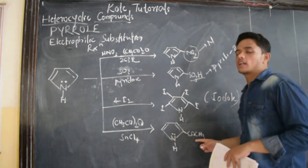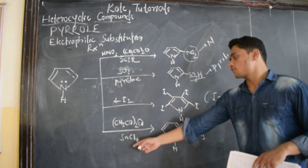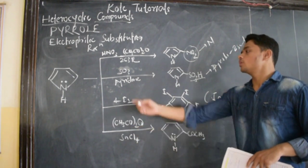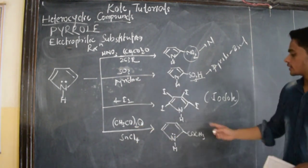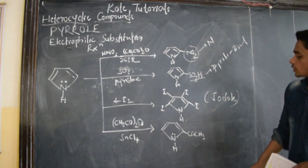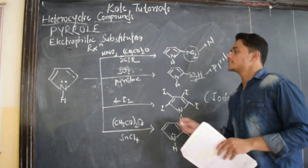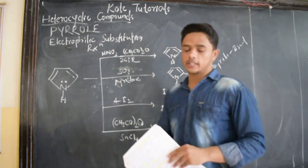This is nothing but Friedel-Crafts acylation. In presence of SnCl2, CH3CO2O reacting to pyrrole, we get this component, 2-acetylpyrrole. This is about electrophilic substitution reaction.